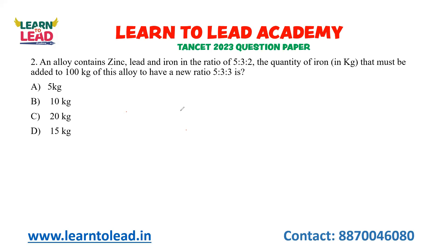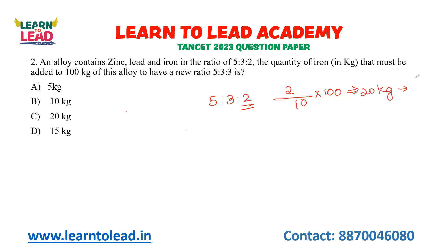This is a question based on alligation. An alloy contains zinc, lead, and iron in the ratio of 5:3:2. The quantity of iron that must be added to 100 kg of this alloy so that the ratio becomes 5:3:3. In the initial alloy, the ratio is 5:3:2, so iron is 2 parts. Therefore, iron in 100 kg = 2 divided by total parts (5+3+2 = 10) into 100 = 20 kg. The final ratio of iron should be 3 by 11.